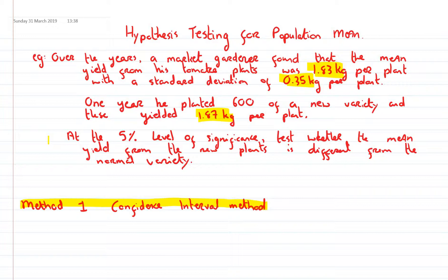Over the years a market gardener found that the mean yield from his tomato plants was 1.83 kg per plant with a standard deviation of 0.35 kg per plant.